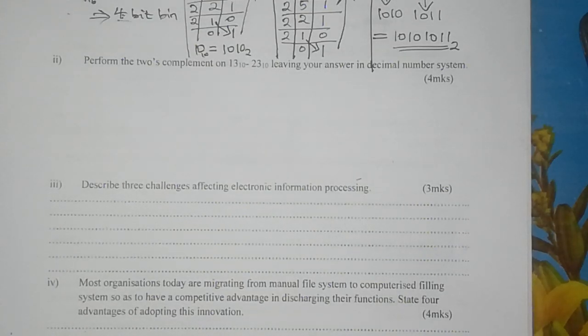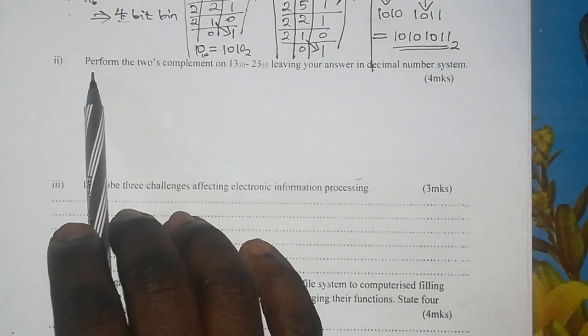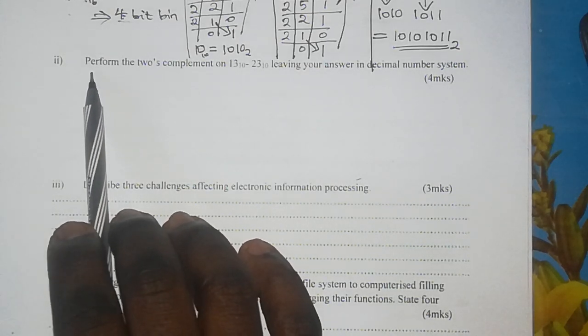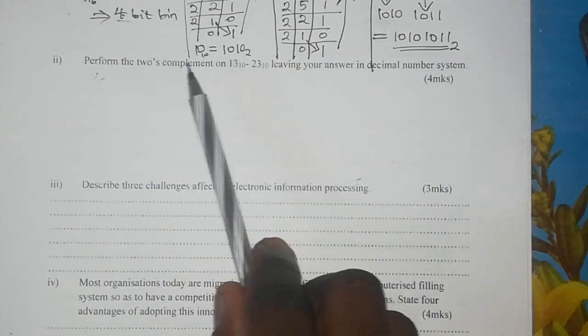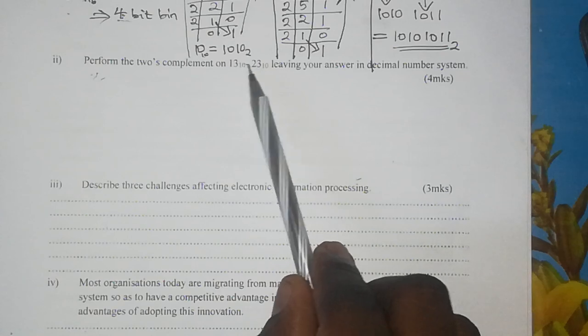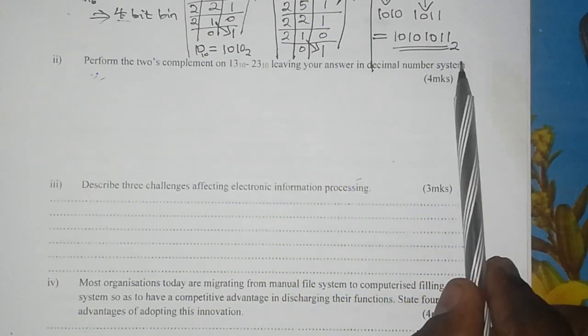Welcome once again. This time we move on to another question in the same paper we have been going through in the previous few videos. The question reads: Perform the 2's complement on 13×10 minus 23×10, leaving your answer in decimal number system.